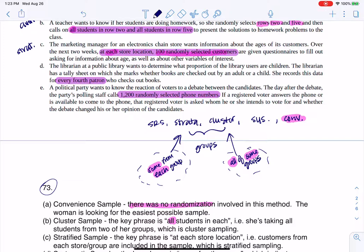The next one, if we take a look, the key phrase there is the every fourth patron. Whenever that happens, we're talking about a systematic sample, right? Because systematically, you take every third, every fourth, every fifth.